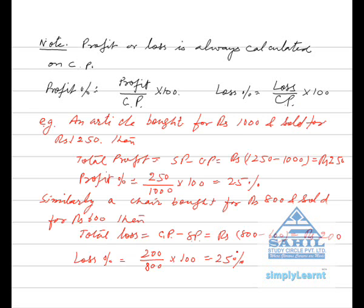For example, an article bought for Rs.1000 and sold for Rs.1250. Then total profit is SP minus CP which is equal to Rs.250, and profit percent is 250 divided by CP into 100, that is 25%.